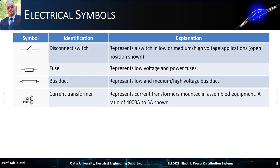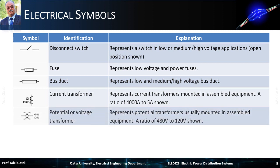A ratio of 4000 amperes to 5 amperes is shown here. The next symbol represents potential transformers usually mounted in assembled equipment. A ratio of 480 volts to 120 volts is shown here.